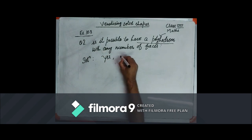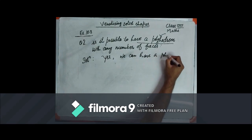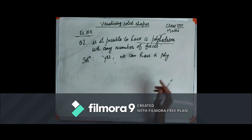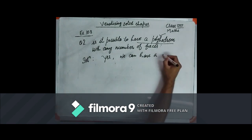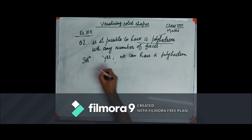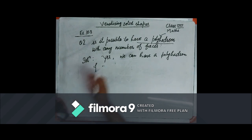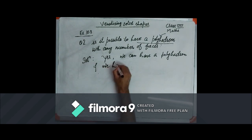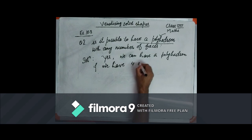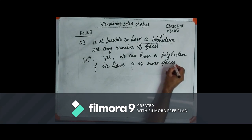We can have a polyhedron if we have four or more faces. That's all.